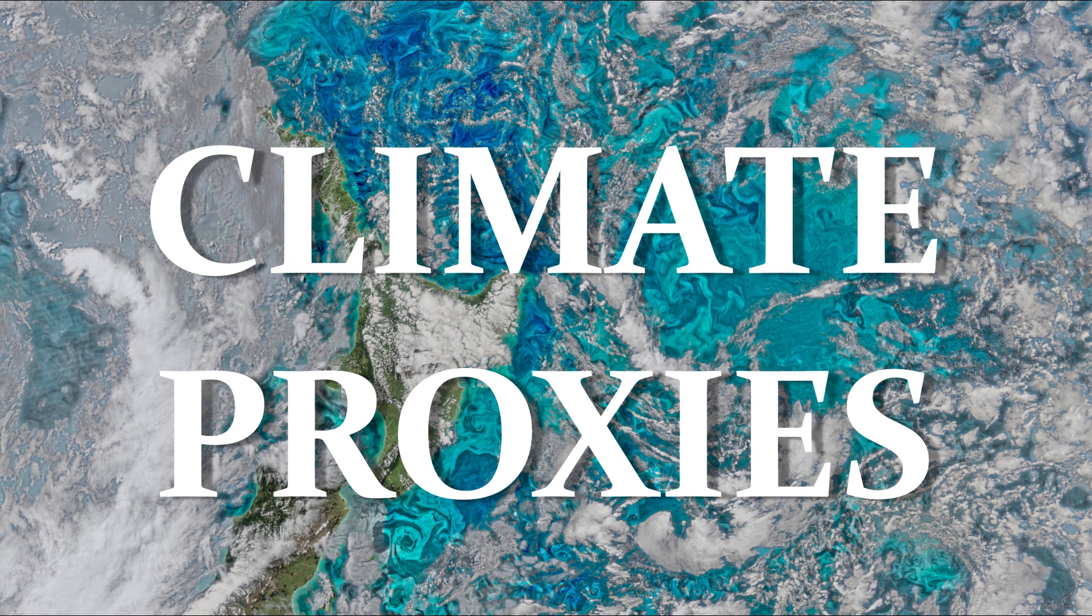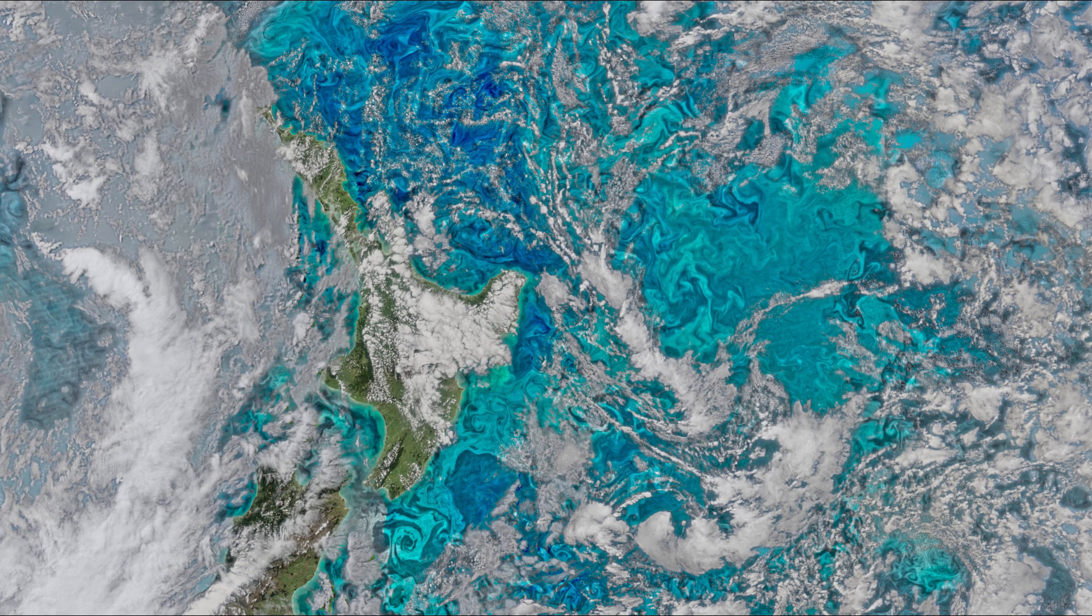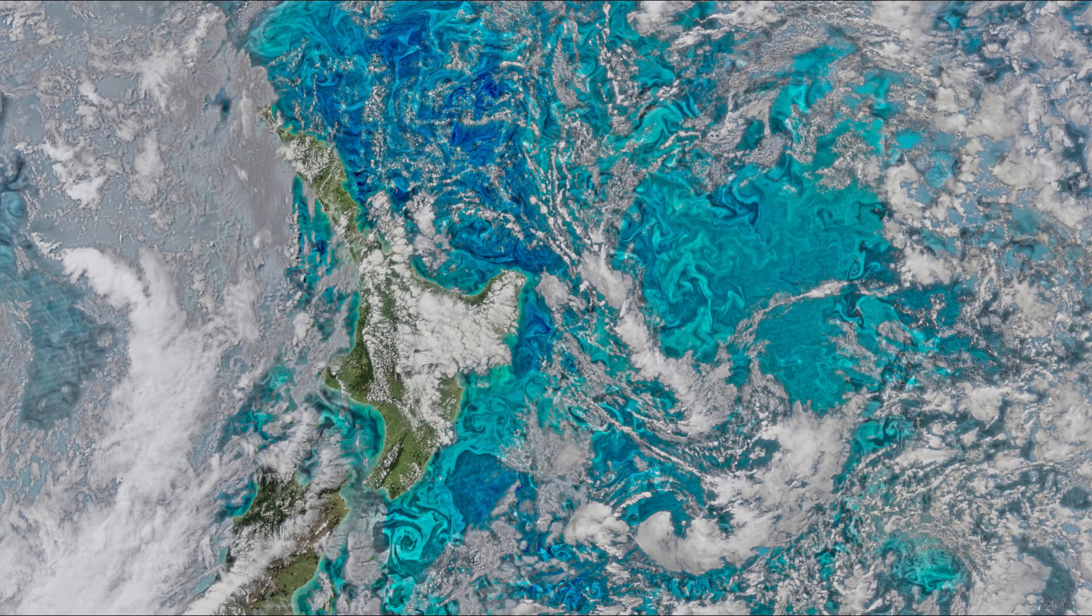What are the climate proxies? Which proxies do scientists use to figure out the climate of the past? How can we use chemistry to figure out the history of Earth's climate? Let's talk about that.